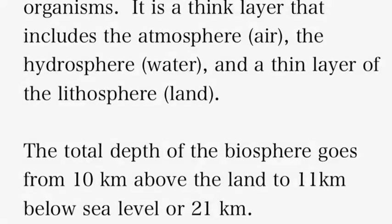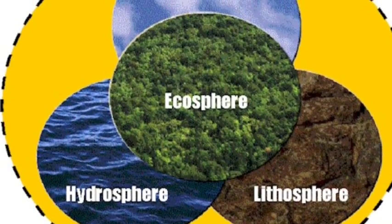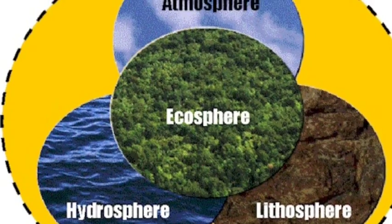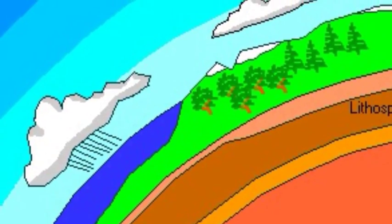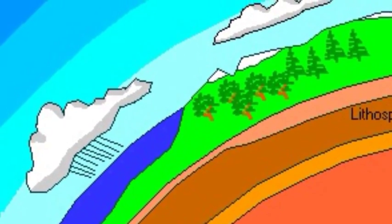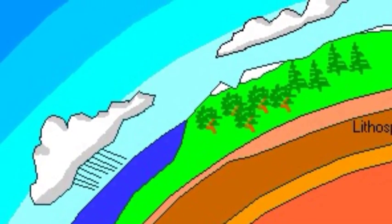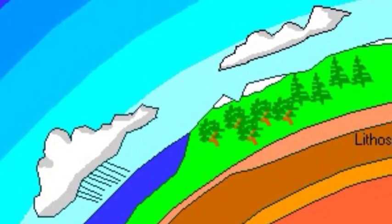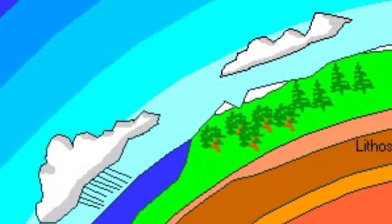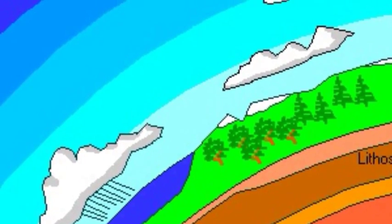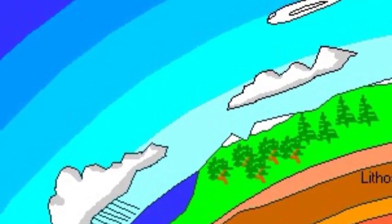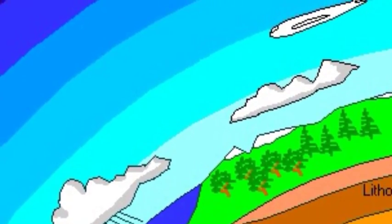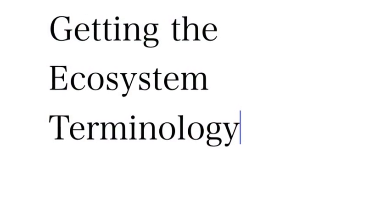The biosphere is everywhere on planet Earth where we find life. We find life at the bottom of the ocean, at the top of the atmosphere, and in a super thin layer of the land — the lithosphere. So the biosphere encompasses the atmosphere, the hydrosphere, and the lithosphere, and it's only about 21 kilometers thick.